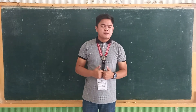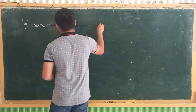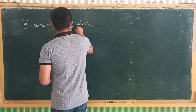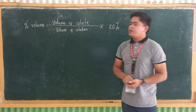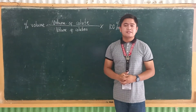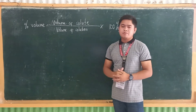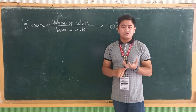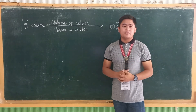To compute the percentage volume, let us be guided with this formula. Percentage volume is equal to the volume of solute divided by the volume of solution, multiplied by 100%. The volume of solute is the volume of our solute added in the solution, and the volume of solution is the total volume — that is, the volume of solute plus the volume of solvent.